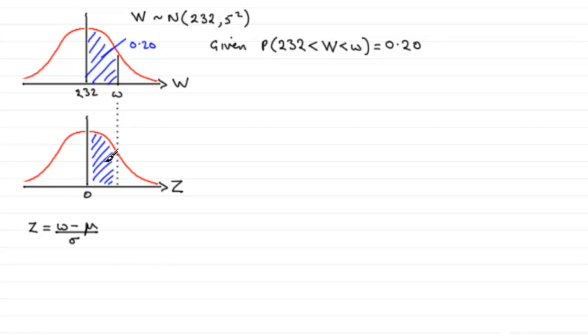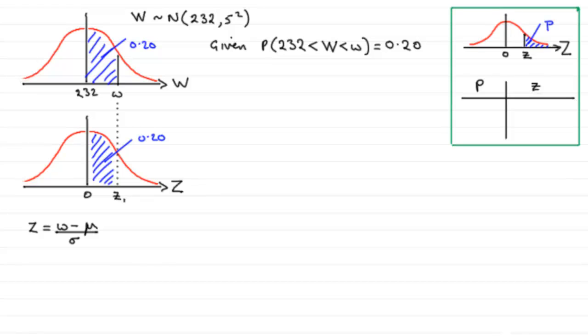would be 0.20, just the same. Let's just put that this is our value, say z₁. Now, when we're doing questions like this, we've got to think about what our tables give us in the way of probability. We've got two tables normally that we can use. We've got these ones called the inverse normal